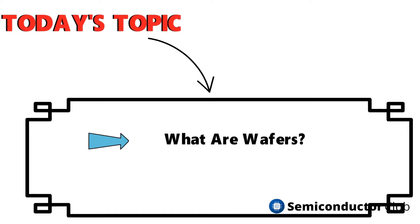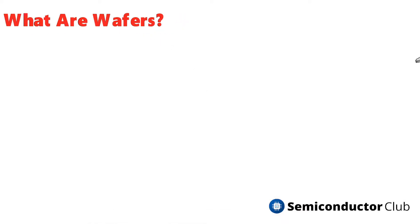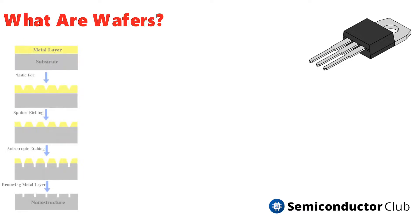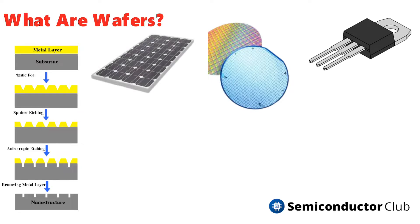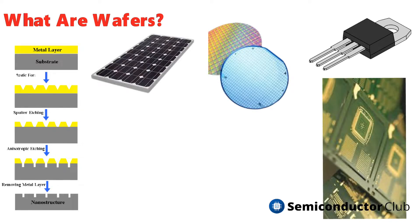Semiconductor devices are built up in a series of nanofabrication processes performed on the surface of substrates made from highly pure single-crystal silicon. These substrates are usually known as wafers.